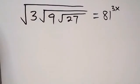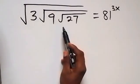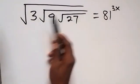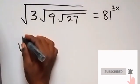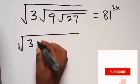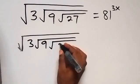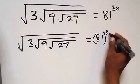Hello, you are welcome. How to solve this problem: root 3, then root 9, then root 27 — everything is under the first root — and we have another root, so this equals 81 raised to power 3x. We can take the square on both sides, where we have root 3, then root 9, under that root we have root 27, which equals 81 raised to power 3x.